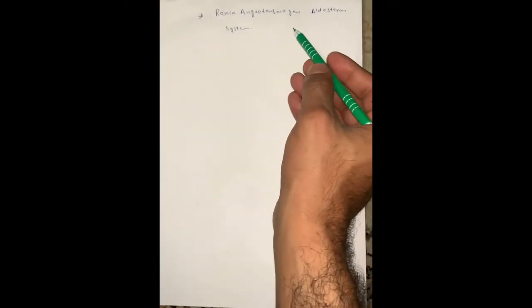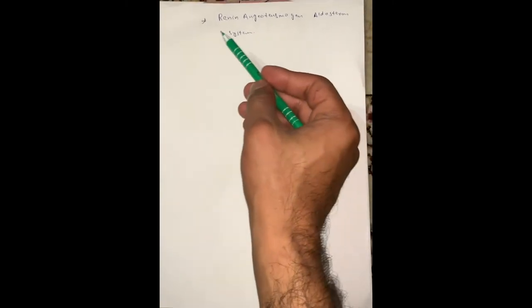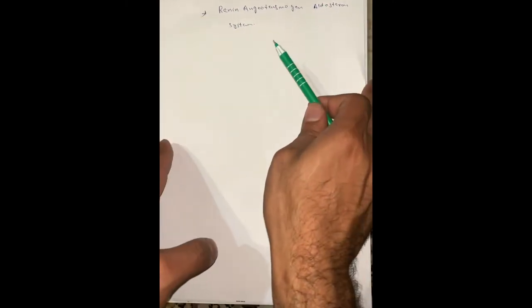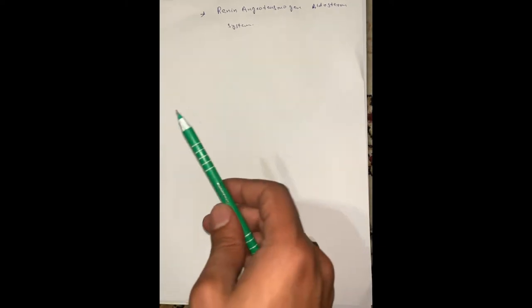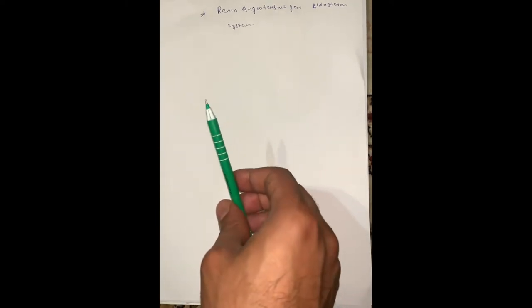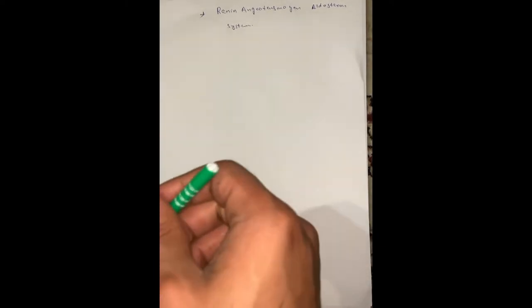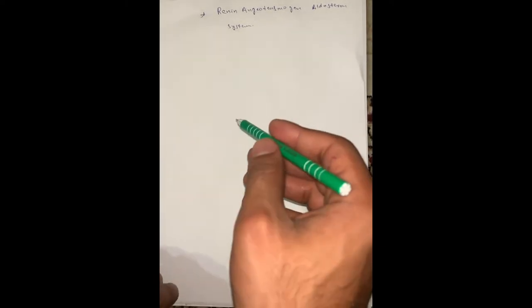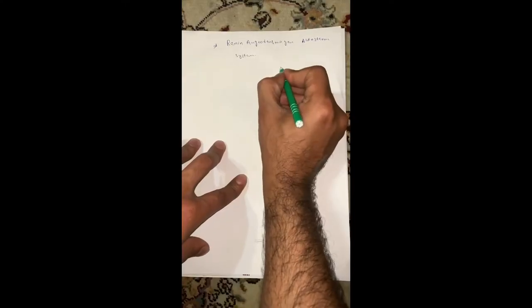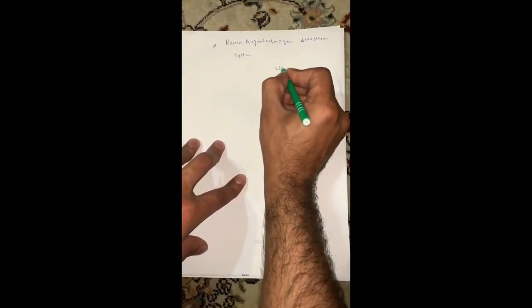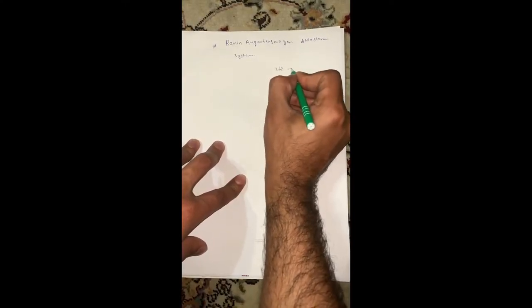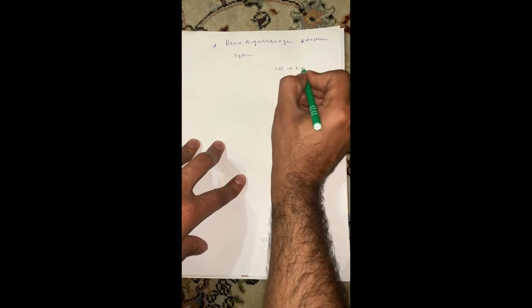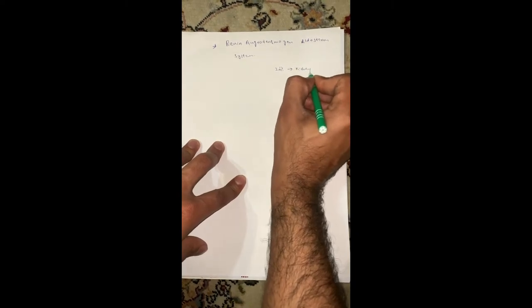Today we are going to discuss the renin-angiotensin-aldosterone system. Nearly 20% of the cardiac output is supplied to the kidney. This 20% of blood goes toward the kidney with the help of the afferent artery.